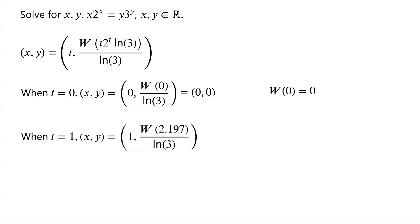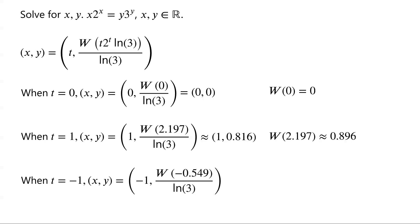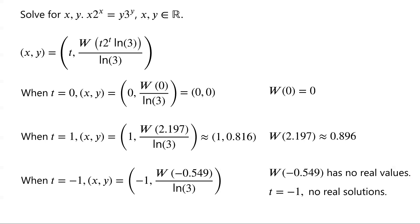If t equals 1, then (x, y) equals (1, W(2 times ln(3)) / ln(3)). Since 2 times ln(3) is approximately 2.197, W(2.197) is approximately 0.896, so the corresponding solution (x, y) is approximately (1, 0.816). What about t equals negative 1? Then (x, y) equals (−1, W(−0.549) / ln(3)). But W(−0.549) has no real values, so when t equals negative 1, the equation has no real solutions.